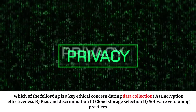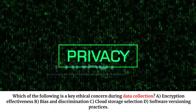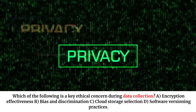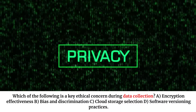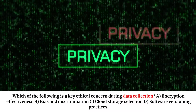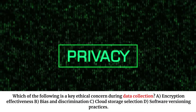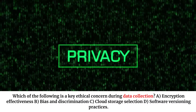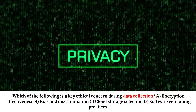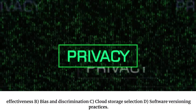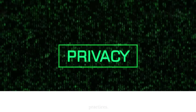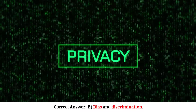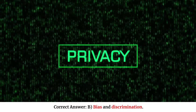Which of the following is a key ethical concern during data collection? A. Encryption effectiveness. B. Bias and discrimination. C. Cloud storage selection. D. Software versioning practices. Correct answer: B. Bias and discrimination.